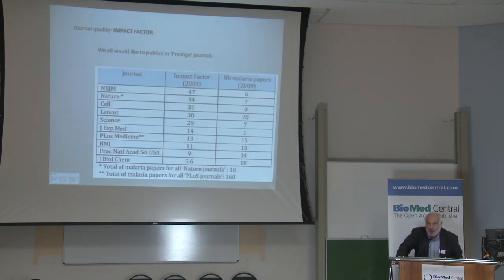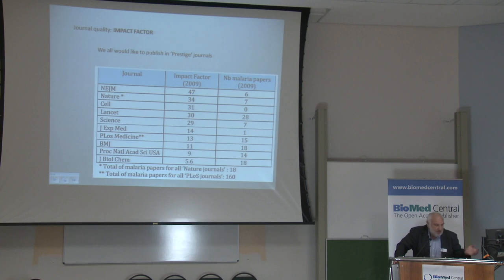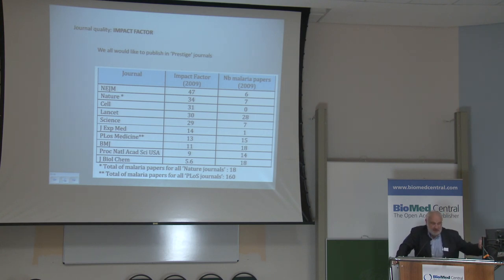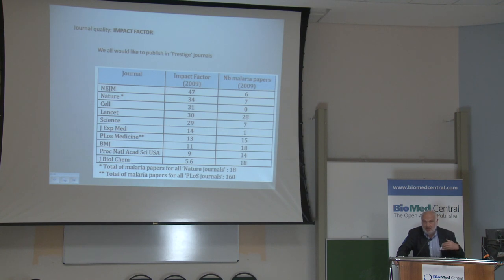All of us would like to publish in prestige journals. New England Journal of Medicine, Nature, and so on, have impact factors of 47 and 34 respectively. But the number of people who actually achieve that is very small — in 2009, there were only six papers on malaria in the New England Journal of Medicine. So obviously, the chances of getting into those prestige journals are pretty small.